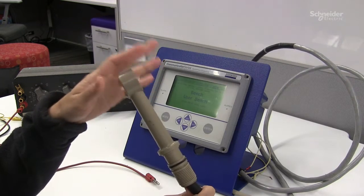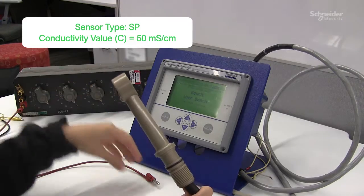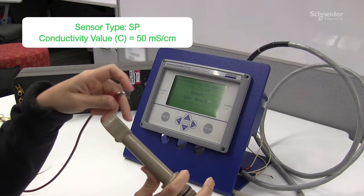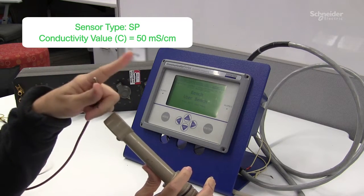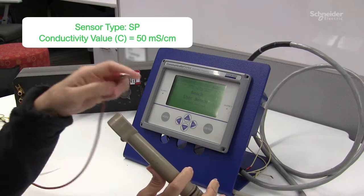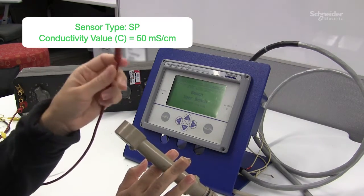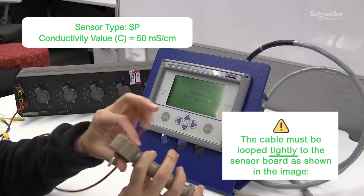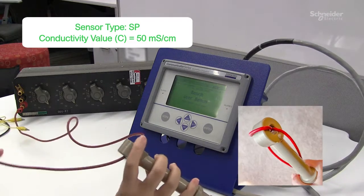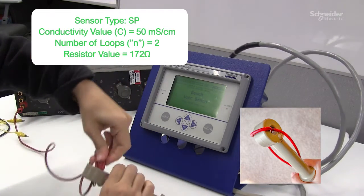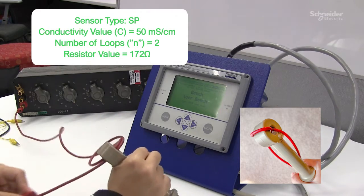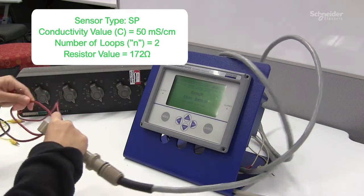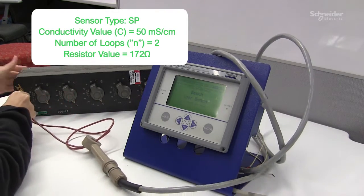And if I wanted to have 50 millisiemens with just one loop in the board, I will get a resistivity that is below 100 and that is not recommended. So when that happens, like in our case, you need to loop more loops of wire through the sensor board. And according to our calculations, if I were to do two loops of wire through the board, I'm going to connect this back to the decade box.